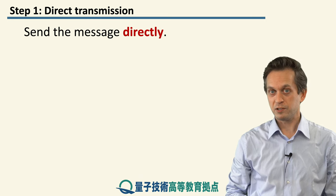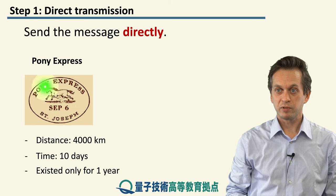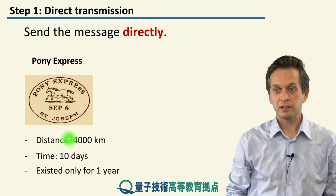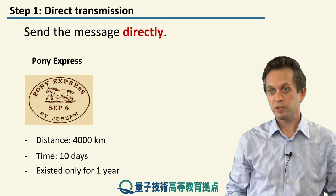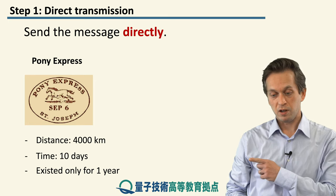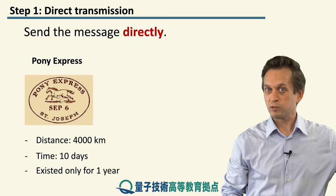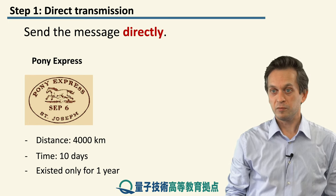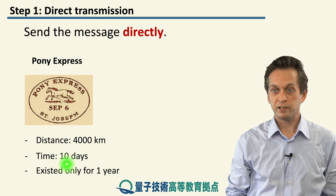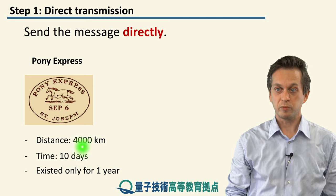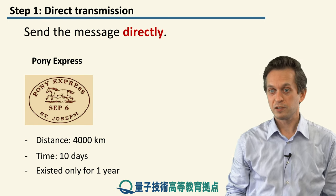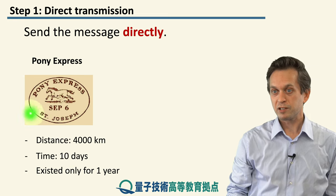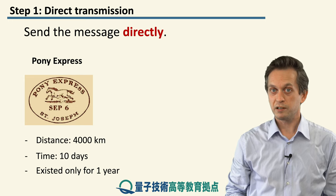Another example is the Pony Express, a company set up in the early US that connected the East and West Coast. A horse rider would deliver your message, changing to a fresh horse at relay stations along the way. The entire journey of 4,000 kilometers took approximately 10 days — very fast in the context of communication speeds at the time. You could also send small parcels, making it a very early Amazon. Despite its success, the company only existed for one year, and we will see later why.